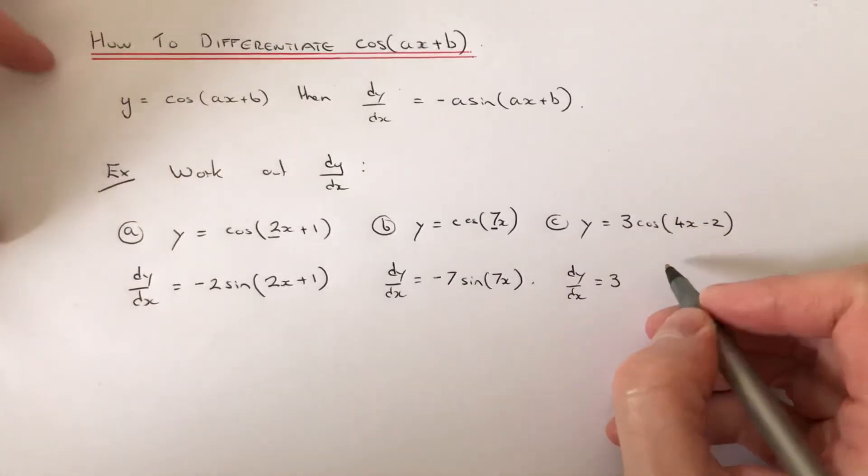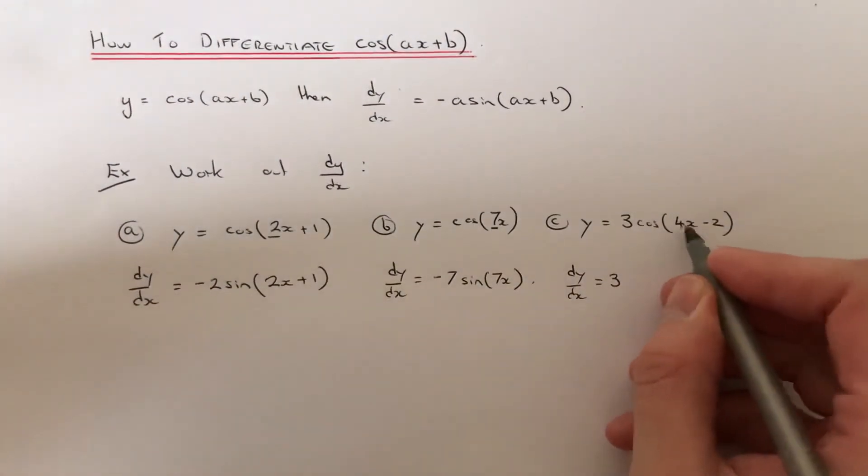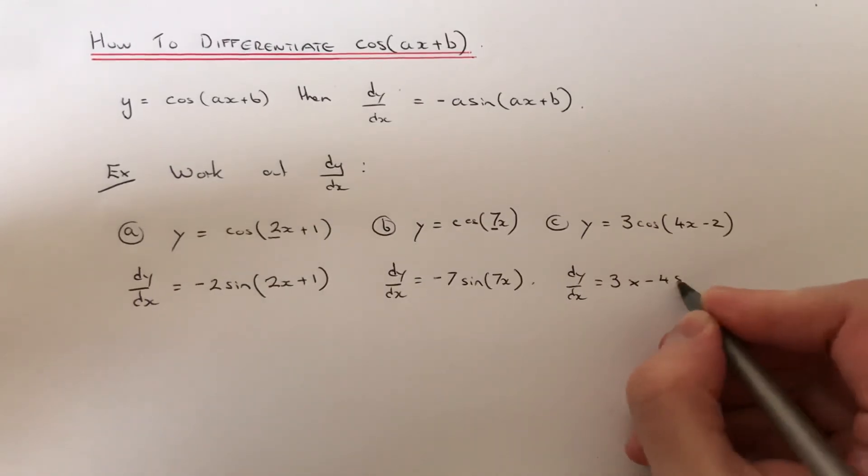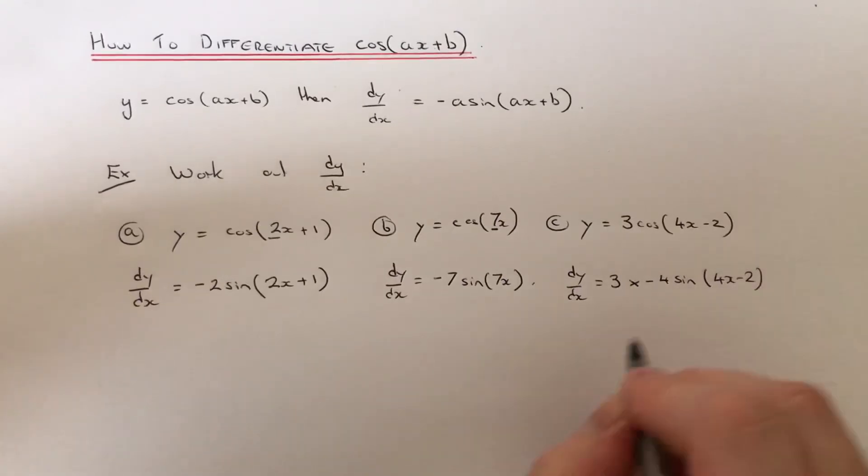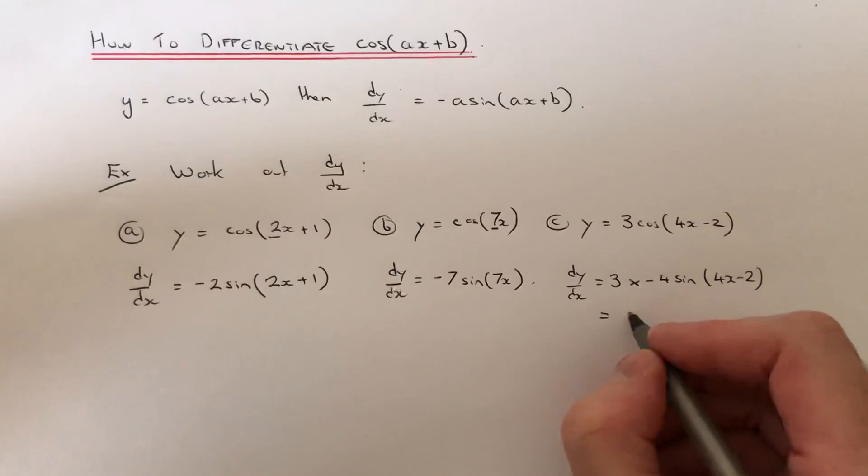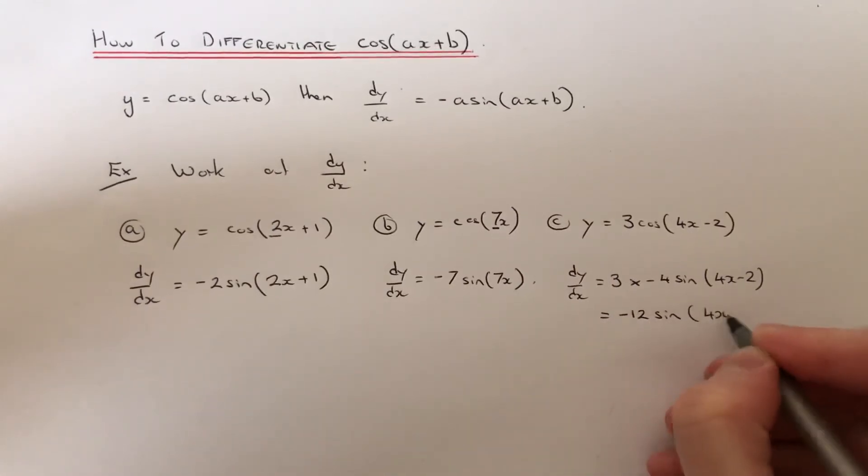We know cos goes to minus sine and we're going to multiply it by the number before x. So it would be 3 times minus 4 sine(4x-2). And then if we just simplify it, 3 times minus 4 is minus 12 sine(4x-2).